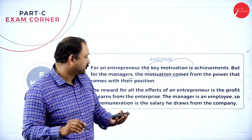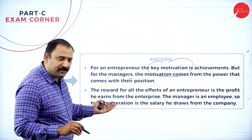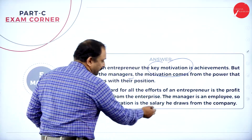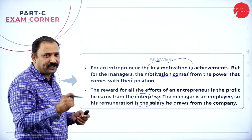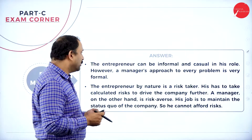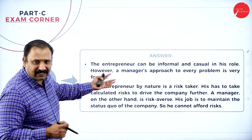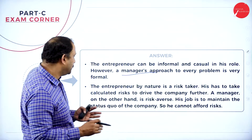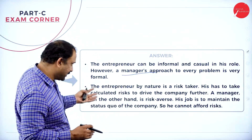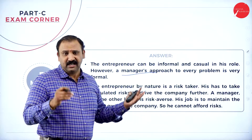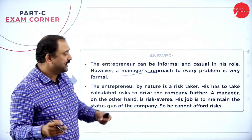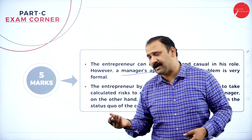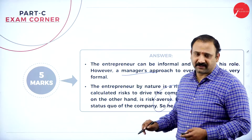For an entrepreneur, the key motivation is achievement; for a manager, it is the job and salary. The entrepreneur can be informal and casual in his role, but the manager must be strict in solving every problem. By nature, the entrepreneur is a risk-taker, whereas the manager is risk-averse — he works in a manner to avoid risk rather than take it.